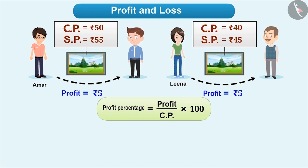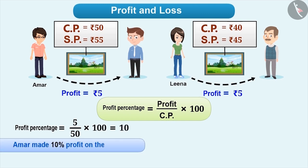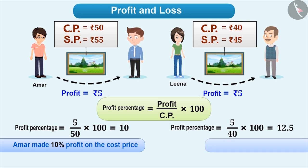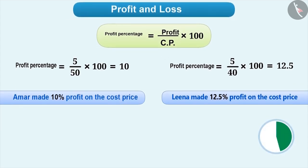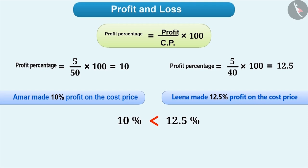So profit percentage of Amar is equal to 5 by 50 into 100, which is equal to 10. That means Amar has made 10% profit on the cost price. And the profit percentage of Leena is equal to 5 by 40 into 100, which is equal to 12.5. That means Leena has made 12.5% profit on the cost price. Since 12.5% is greater than 10%, Leena made more profit.